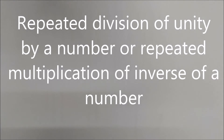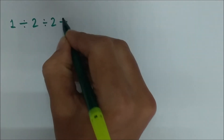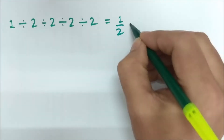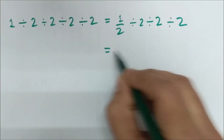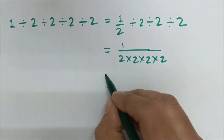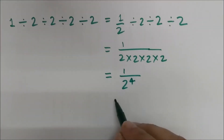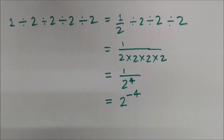What if a number divides unity many times? For example, 1 divided by 2, which is again divided by 2, again divided by 2 — this can be written as 1 divided by 2 raised to the power 4. This is expressed as a negative power: 2 raised to the power minus 4. That is how repeated division is denoted in terms of powers.